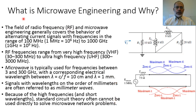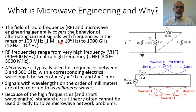The first point is: what is Microwave Engineering? The field of microwave engineering generally covers the behavior of alternating current signals with frequencies in the range of 100 MHz to 1000 GHz, which means from 10 to the power 6 Hz to 10 to the power 12 Hz. This is the frequency range of Microwave Engineering.